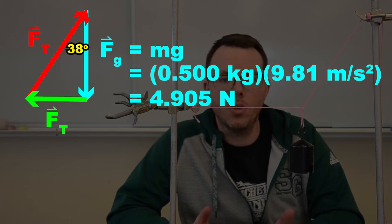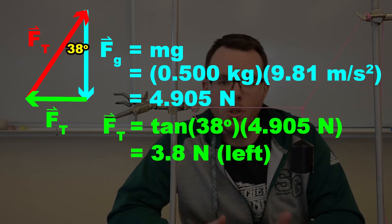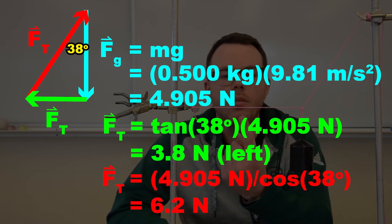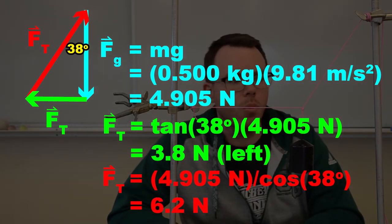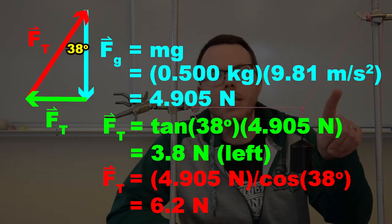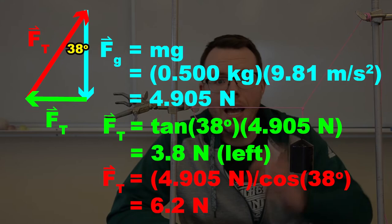Now all that's left is to do a little bit of trigonometry to work out the other two sides of the triangle. The horizontal side will be the force of tension from the horizontal rope, and the diagonal or hypotenuse will be the force of tension in the diagonal rope.